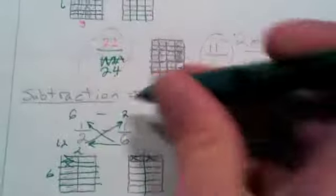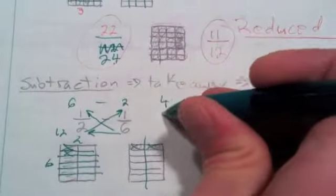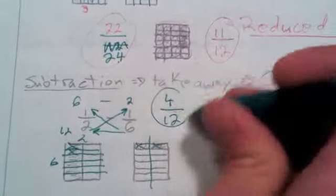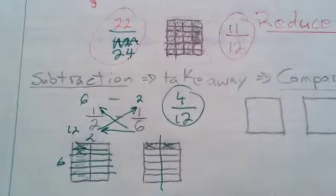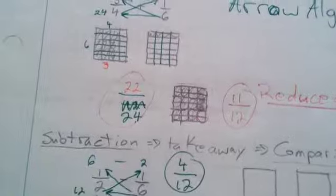And then subtracting six minus two is four out of twelve, I get a really quick answer out of that. Then I have to consider whether I should reduce that answer or not.